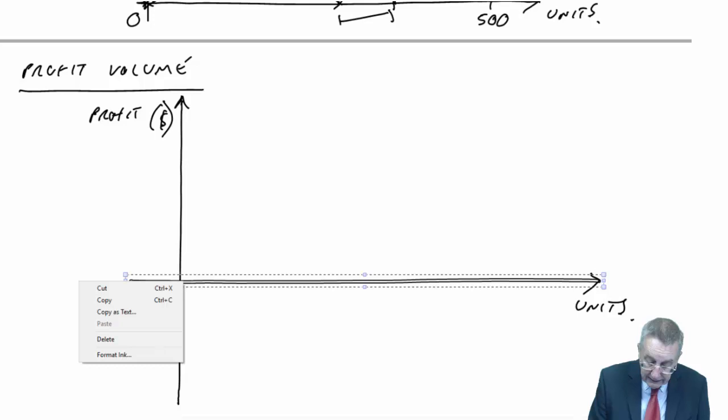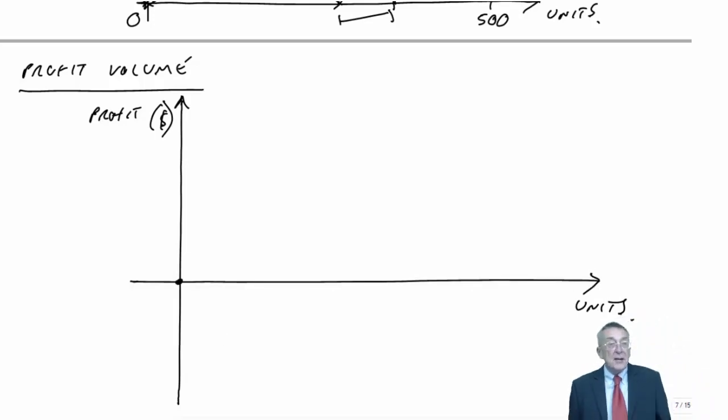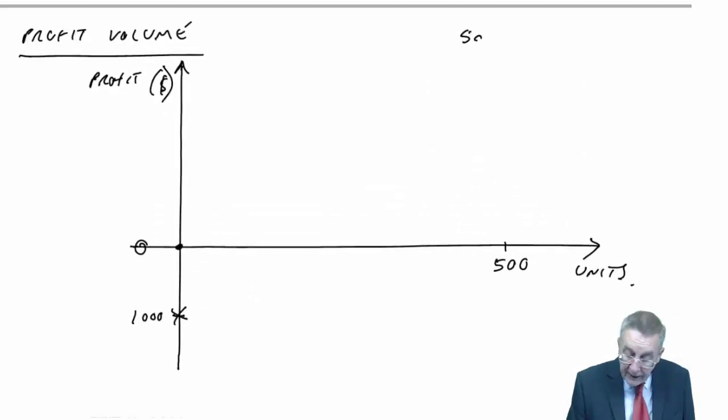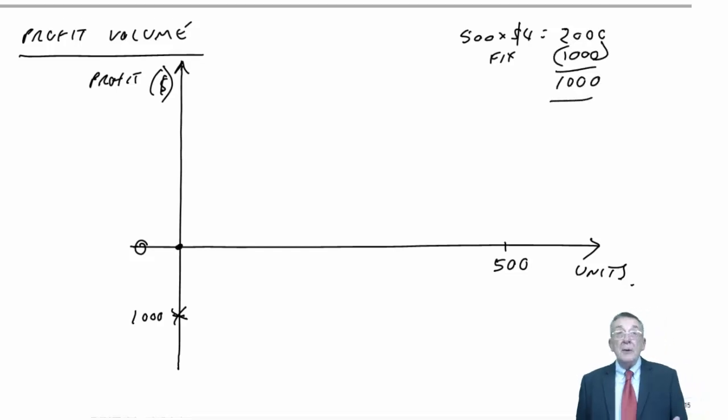For this one, instead of showing the revenue and costs separately, we simply draw a graph showing what the profit will be for the output. If we sell no units, we've still got the fixed costs, so we'll be making a loss of $1,000. On the other hand, if I sold 500 units with a contribution at $4 per unit, which is $2,000, minus the fixed costs of $1,000, the profit is $1,000.